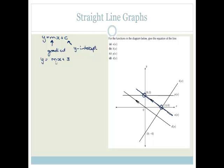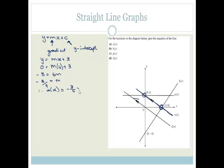There are a couple of ways to find the gradient, but the easiest way is to substitute in the point (4, 0). So when x is 4, y is 0: 0 = m(4) + 3. Solving for m: −3 = 4m, therefore m = −3/4. Therefore, a(x) = −(3/4)x + 3.